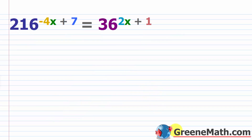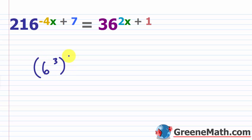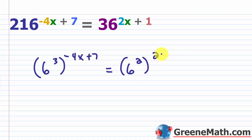Let's look at one with a little more work. We have 216 raised to the power of negative four x plus seven, equals 36 raised to the power of two x plus one. Neither base is prime, so I need to relate them. 36 is six times six, so six squared. Is 216 divisible by six? Yes — 216 divided by six is 36, so 216 is six cubed. So I rewrite: six cubed raised to negative four x plus seven, equals six squared raised to two x plus one.